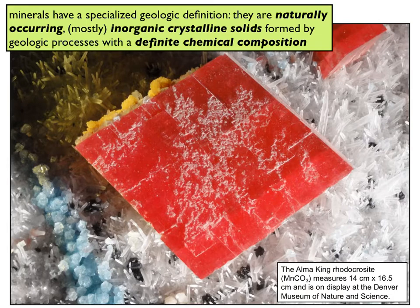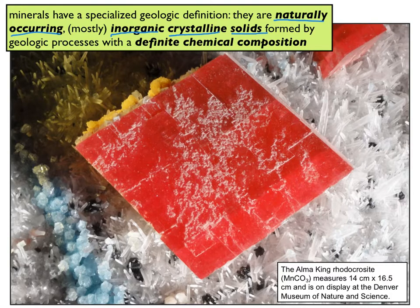All minerals have to be naturally occurring — the earth has to make them. They have to be inorganic, they have to be crystalline, they have to be solid, and they have to be formed by geologic processes with a definite chemical composition. Those five things are the five criteria that define what geologists consider to be minerals.